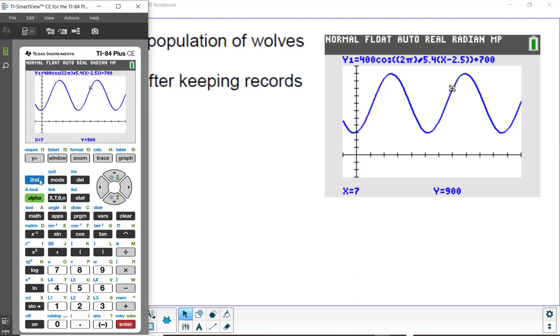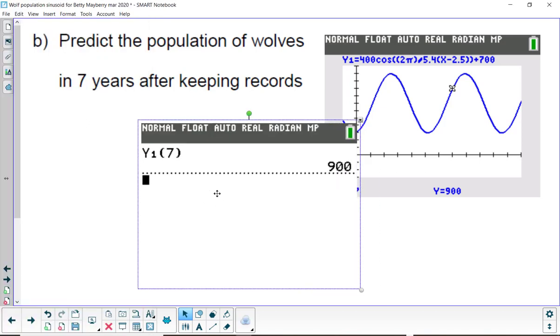Another way to answer this would be to go off to the home screen and bring up y1. And a quick way to find y1 is alpha trace is where the y guys are stored. So, y1, evaluate that at seven years for t. And there's our 900 also.